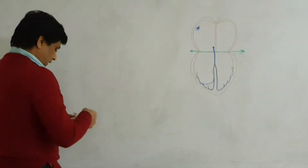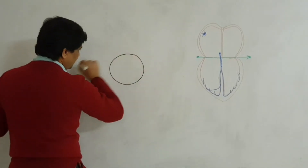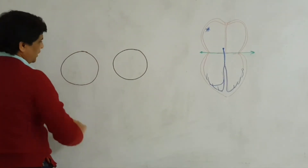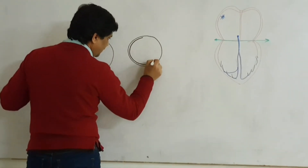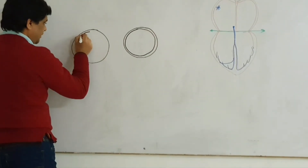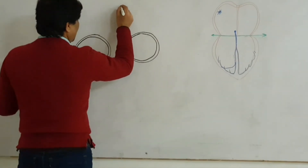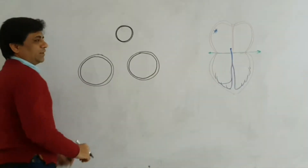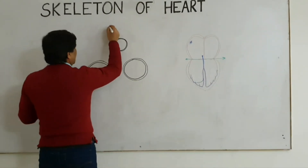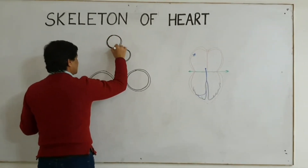To show you the skeleton, consider a transverse section at the AV junction. In a cut section, you will find that there will be two rings — the right and left AV rings, the atrioventricular rings. Being rings, they will be fibrous rigid rings, and this rigidity is provided by dense connective tissue fibers. Anterior to that there will be another ring — the aortic ring, the ring of the aortic valve. The aortic valve will be attached to this.